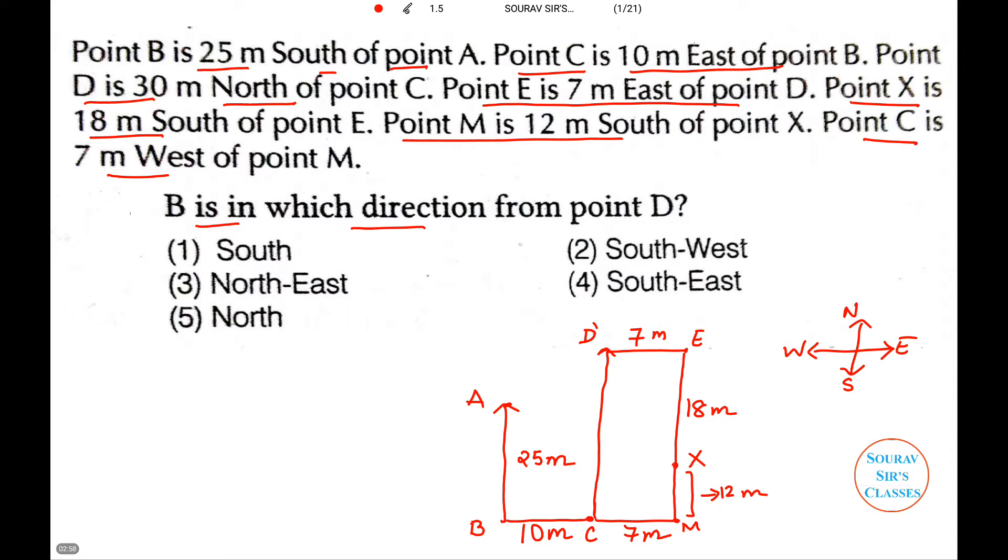So, from point D, B is in which direction? So, it is clear from the diagram that point B is in south-west direction from point D.